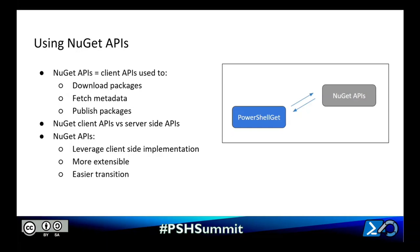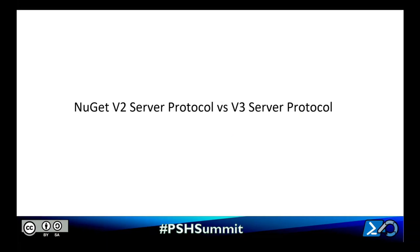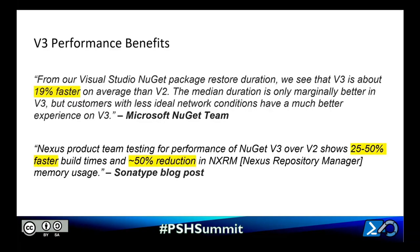One exciting new feature with PowerShell Get v3 is that it'll be able to interact with the NuGet v3 server protocol, and that brings a bunch of performance benefits. The NuGet team states that v3 is about 19% faster on average than v2, and customers with less ideal network conditions have a much better experience on v3. The Nexus repository manager testing shows 25% to 50% faster build times and about a 50% reduction in memory usage. There are significant advantages in moving to a protocol that's newer and more thoughtfully designed.